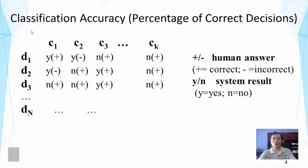The first measure we introduce is classification accuracy, which measures the percentage of correct decisions. There are k categories denoted c1 through ck, and n documents denoted d1 through dn. For each pair of a category and a document, we look at the situation and see if the system has said yes — that is, assigned this category to this document — or no. This is denoted by Y or N as the system's decision.